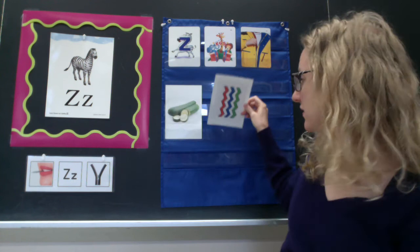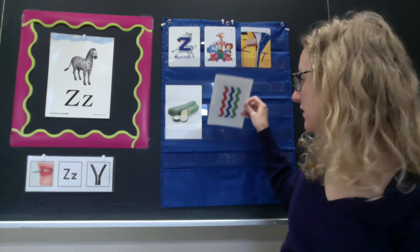Zigzag. Zigzags are lines that go back and forth. And zero. When you don't have anything, you have zero. If I have zero apples, I don't have any apples. All right. Remember, Z says zzzz. I hope you have a great week, and I'll see you next time.